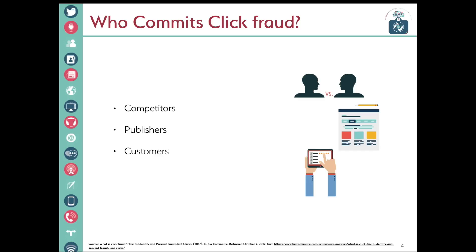So what do they do? Simple. They pay someone, use an automated script, or use a program that will search for our keywords, click on our ad, and deplete our budget within a few hours. The second type is publishers. Publishers sometimes will do it themselves or use their friends to click on the ad to generate revenue for them.